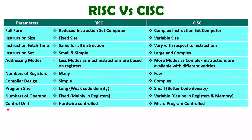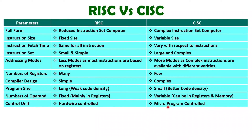When you talk about the control unit, then in RISC architecture we can have a hardware control unit, because the number of instructions are less and simple. But with CISC architecture, you have many instructions and those are complex, so the control unit will be very costly if you have hardware control. In that case, you can have a micro-program controlled control unit so that you can have flexibility in terms of number of instructions with a large instruction set and complex instruction set.